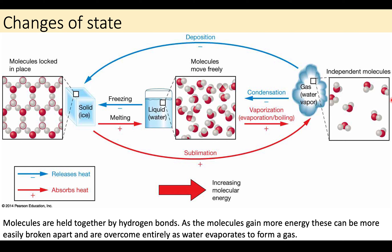Changes of state are another interesting property of water. From solid ice, we can melt to form liquid water. Liquid water can be vaporized or evaporated into gas — water vapor. Gas can condense into liquid, and liquid can freeze into solid ice. We can also go from solid ice directly to water vapor through sublimation, or water vapor can go straight to solid ice by skipping the liquid phase — called deposition, though these are less common.